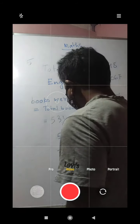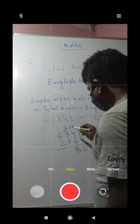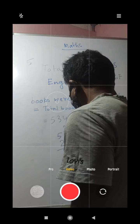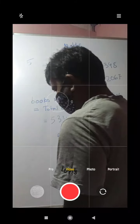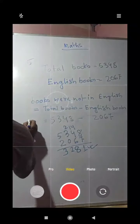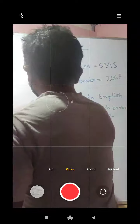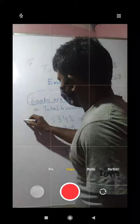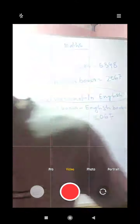So 3281 books were not in English. 2 minus 0 is 2, and 5 minus 2 is 3, giving us 3281 as the total answer. Books not in English equals 3281. I hope you have understood. Always write the equation this way — it will be easier for you to understand. This was question number 5. Now we will go to number 6.